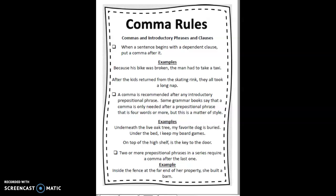This next rule is a hard and fast rule that you will always want to follow: two or more prepositional phrases in a series require a comma after the last one. For example: "Inside the fence at the far end of her property, she built a barn." There are three prepositional phrases in the first part of that sentence — "inside the fence," "at the far end," and "of her property" — then you put the comma, and then finish the sentence: "she built a barn."